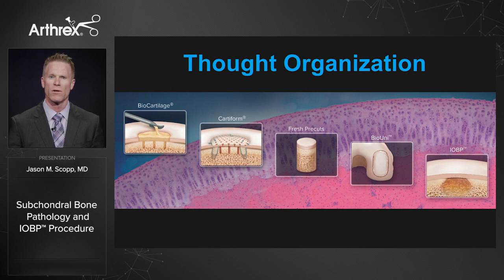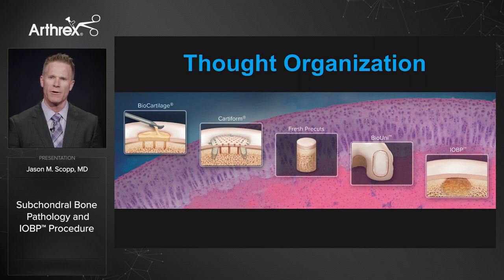For surface treatments, we consider using allograft biocartilage. As lesions get bigger or involve some superficial bone, Cartiform works very well. For focal lesions that involve subchondral bone, a fresh pre-cut allograft or OATS autograft work well. As the lesion gets bigger with more bony involvement, we need to consider an osteochondral allograft — whether a bio uni or mega OATS. But what about lesions with an intact surface but large edema on MRI? That's where subchondral bone pathology comes into play.